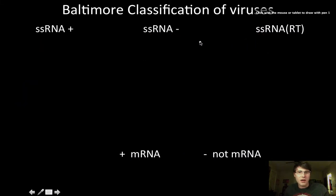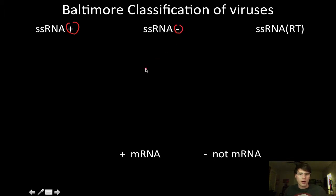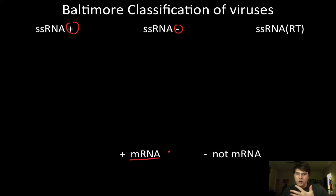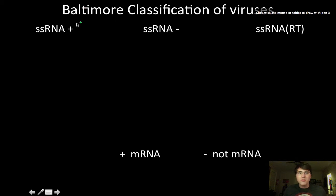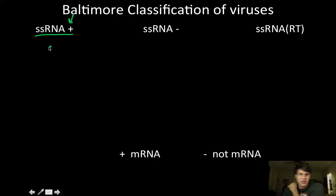Let's talk briefly about positive and negative sense single-stranded RNA. Positive sense means the RNA can directly be used as messenger RNA — it gets inside the cell and can be used immediately. Examples of positive sense single-stranded RNA viruses include hepatitis C, the virus that causes SARS, and West Nile virus.